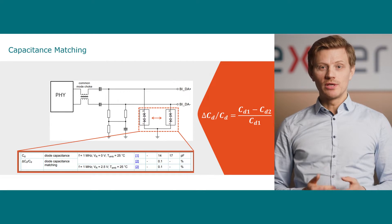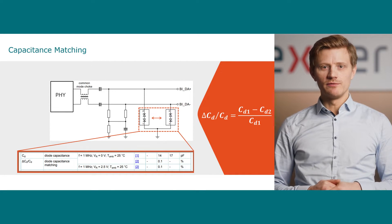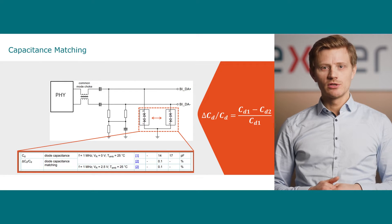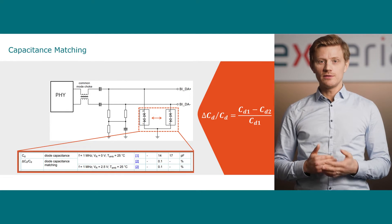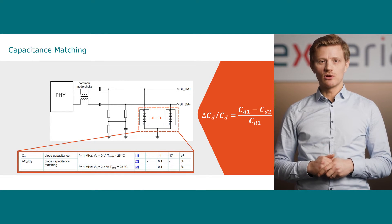To keep the symmetry in the system, the deviation in those capacitances should be minimized. This deviation is called capacitance matching. In modern ESD protection devices, the capacitance deviation is less than 1%, giving the best capacitance matching.